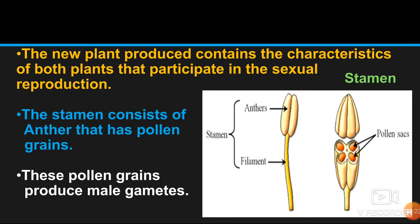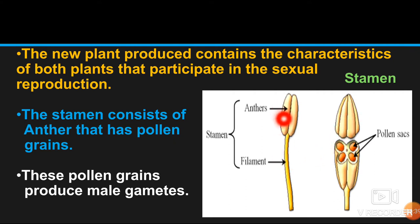This is the male reproductive part — the stamen. If you cut the anther, you will find that pollen grains are inside. Sometimes pollen is also attached to the surface. Anther and filament together make the stamen. The new plant produced through sexual reproduction contains the characteristics of both parent plants — from both the mother and father. The stamen consists of the anther that has pollen grains, and these pollen grains produce male gametes.